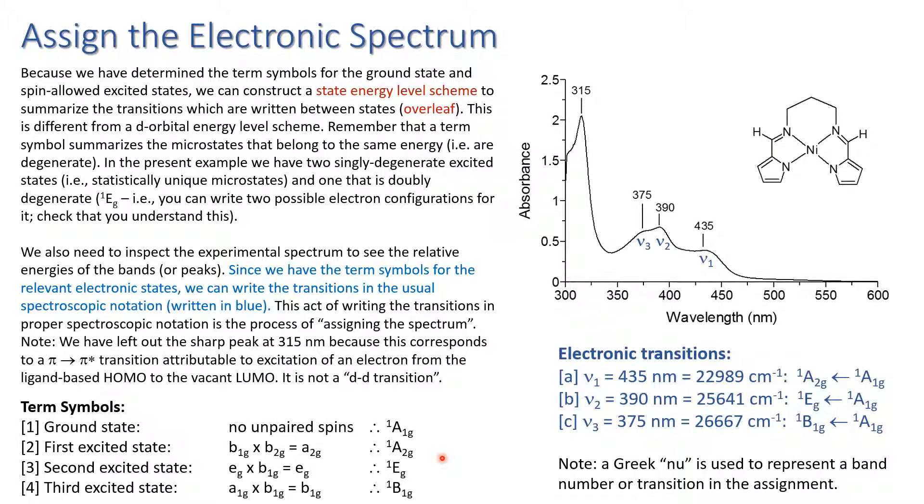We've got the term symbols. Now we assign the spectrum. Here I've just shown the term symbols again so we have them on the same page. We're going to leave the state energy level scheme to the next slide and we're going to focus then on assigning our three bands in the spectrum. So the first band is at 435 nanometers. It's useful to convert this into energy units in reciprocal centimeters. So the wave number that corresponds to 435 nanometers is 22,989 reciprocal centimeters. The assignment for that band, the ground state was singlet A1g, the excited state was singlet A2g. So in spectroscopic notation, we write the excited state first, the ground state second. Essentially then we've assigned that first band as singlet A2g from singlet A1g.